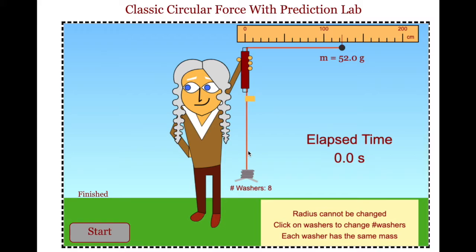So when students open up the program, they will be randomly generated a radius and a mass of a stopper, which they cannot change.